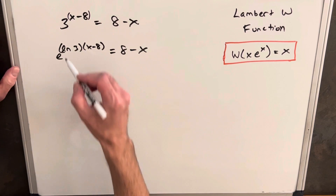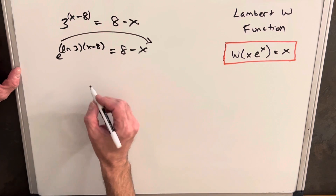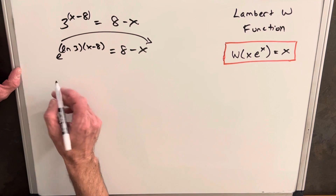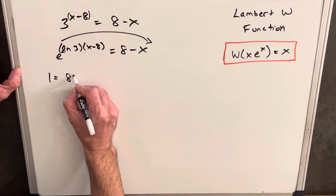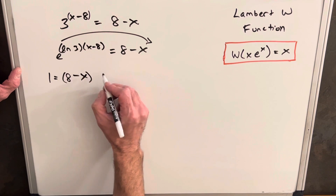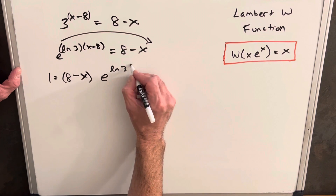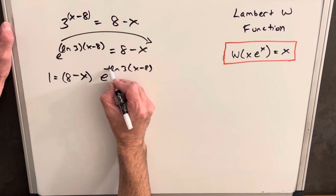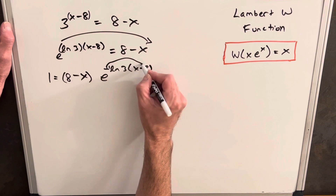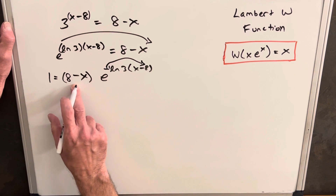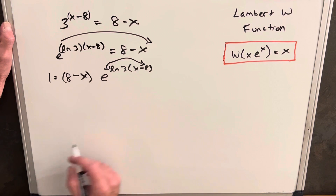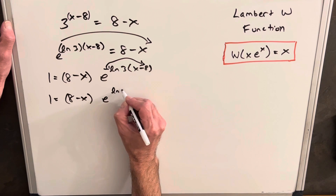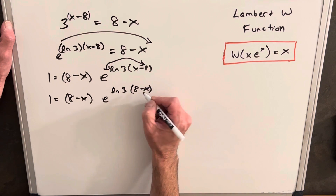With our goal in mind, let's get this on the right side of the equation to make it more similar to the Lambert W format. If we divide both sides by the exponential expression, on the left side we'll have 1, and on the right side we'll have e^((8 minus x) · ln 3 · (x minus 8)), but because we're dividing by it we need a negative sign. I want the negative on this part, not on the ln, so the negative sign flips it — giving us 1 equals (8 minus x) · e^(ln 3 · (8 minus x)).